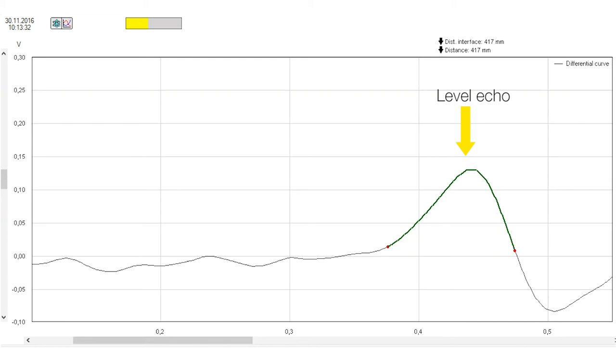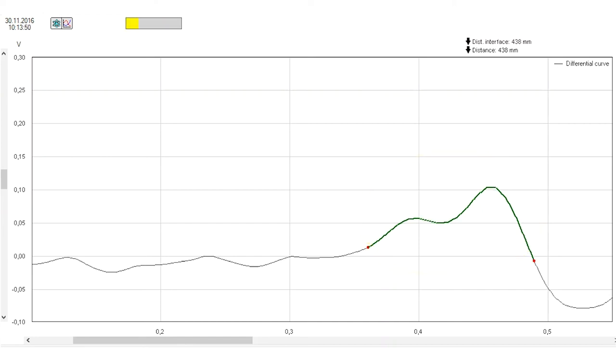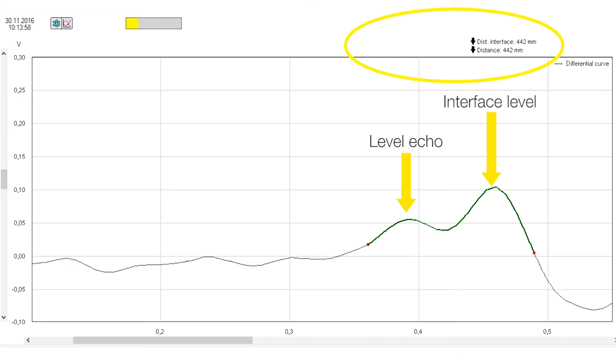You can see now on the echo curve that the level echo is getting wider and wider. And now this echo is separated into two different echo signals. The upper one is the echo signal of the oil, and the lower one is the echo signal of the interface layer between oil and water.